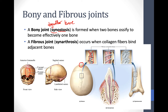Another example of a fibrous joint is the gomphosis, shown here as a zoom-in on the tooth. This is the periodontal ligament, or the socket of the tooth. You can see discrete bundles of fibrous tissue holding the tooth to the socket. If you touch your tooth, it'll wiggle a little bit, but this is what keeps your tooth anchored inside the joint.